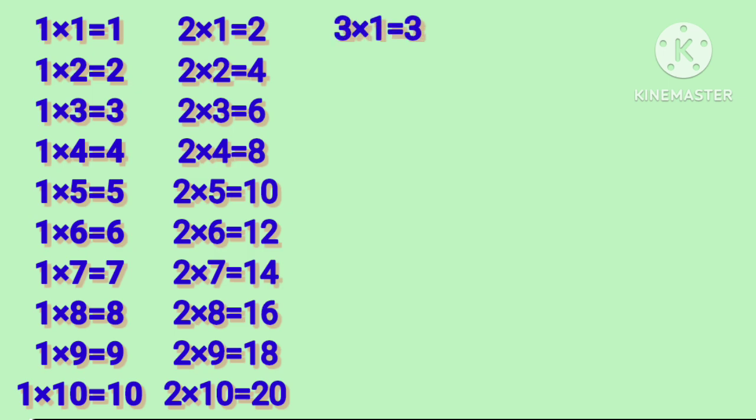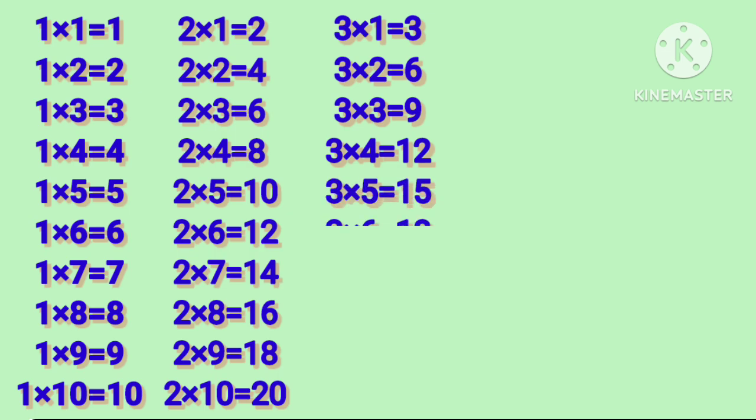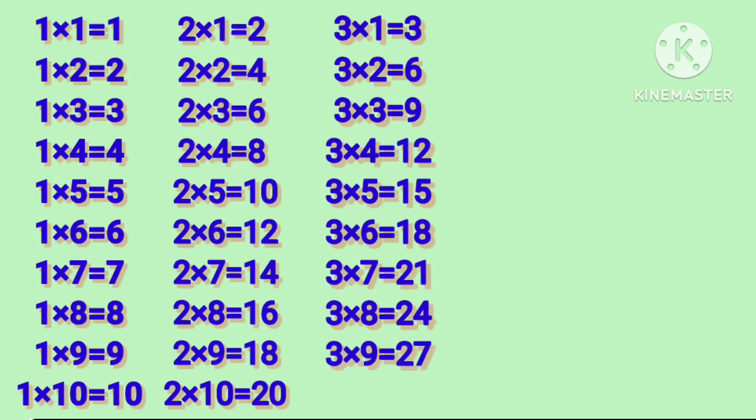3 1's are 3, 3 2's are 6, 3 3's are 9, 3 4's are 12, 3 5's are 15. 3 6's are 18, 3 7's are 21, 3 8's are 24, 3 9's are 27, 3 10's are 30.